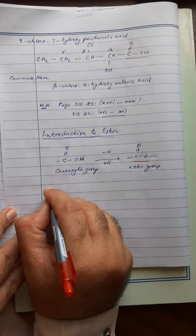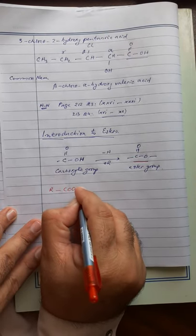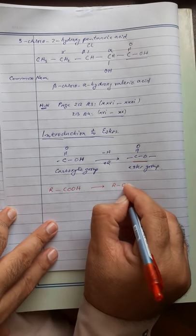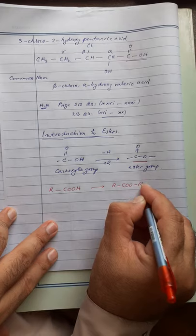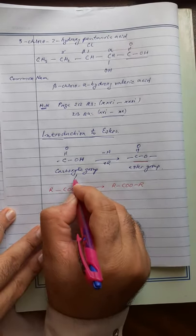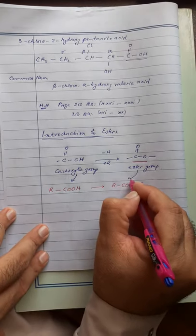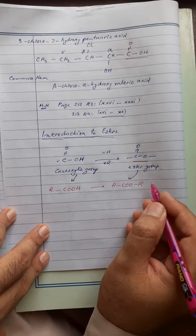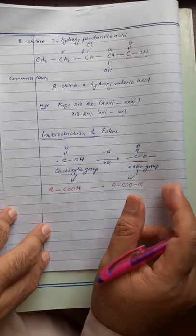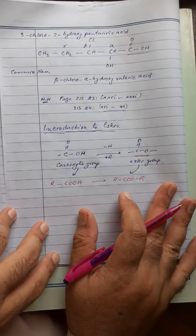So if R-COOH is the carboxylic acid, then R-COOR is the ester group. In the carboxylic group you have R-COOH; in the ester group you have R-COOR, where R is the alkyl group — can be methyl, ethyl, and so on.